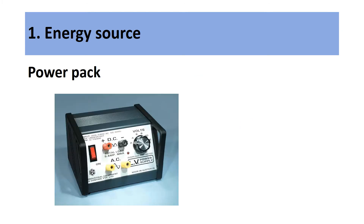Our final energy source is a power pack, which you'll be using throughout the project this term. With this power pack, you're able to adjust the voltage by turning the dial. The positive end matches up with the red port on the power pack, and the negative end matches up with the black port. You'll be clipping your wires using crocodile clips to each of those points, connecting a source of electrical energy to your circuit.